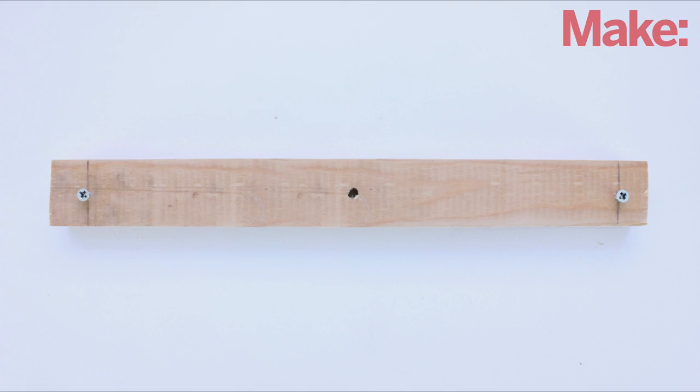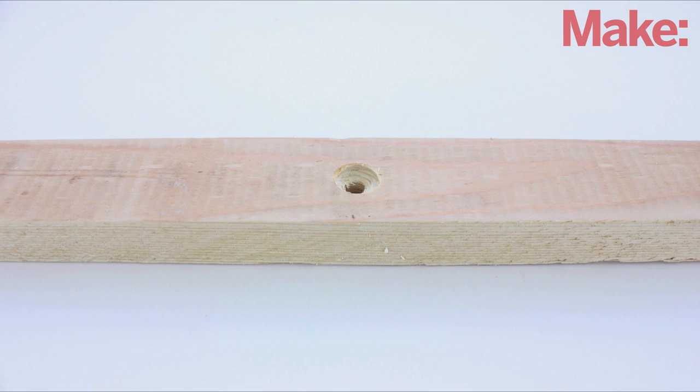Next, drill a ¼ inch hole in the center of the two side boards. Then on the side with the mounting screws, use a ½ inch drill bit to countersink the holes.